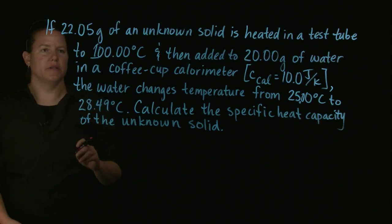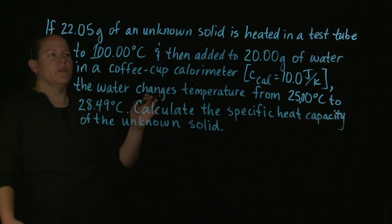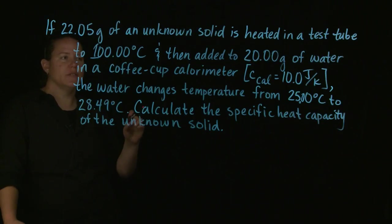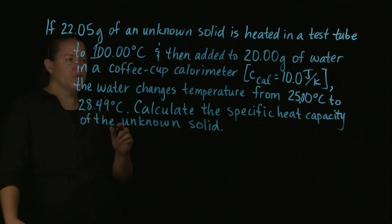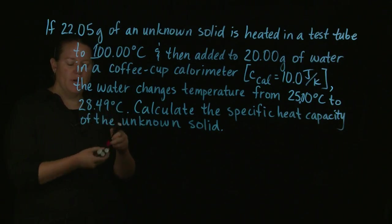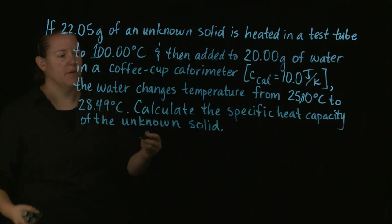This is a ridiculously long problem. If 22.05 grams of an unknown solid is heated in a test tube to 100 degrees Celsius and then added to 20 grams of water in a coffee cup calorimeter, the water changes temperature from 25 degrees Celsius to 28.49 degrees Celsius.